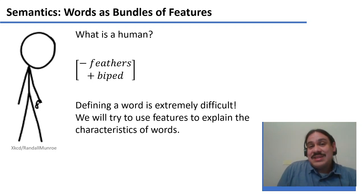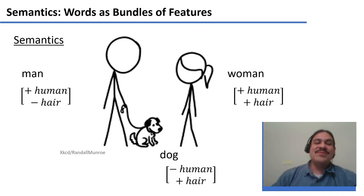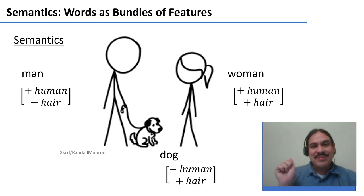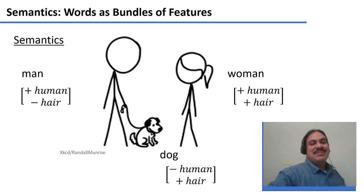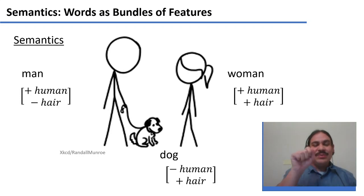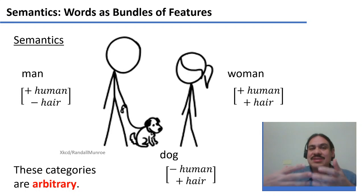Let's see how far the system can take us. Let's try to define three words: man, woman, and dog. We could define woman as plus human and plus hair, as you can see in the example — the woman has hair and the other being does not. Man would be plus human and minus hair. Dog would be minus human and plus hair because the puppy does appear to have hair. This system is again arbitrary, but it is one way to find features that fit the data.